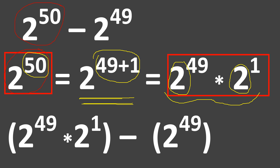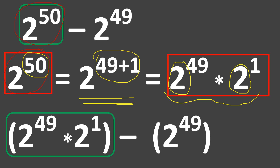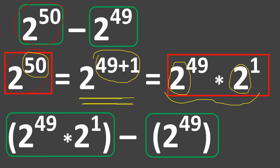We will substitute accordingly. So now you have 2 raised to the power of 49 times 2 raised to the power of 1 — which represents 2 raised to the power of 50 — minus 2 raised to the power of 49. If you look at the top, you have 2 raised to the power of 50 minus 2 raised to the power of 49, and at the bottom it is now expressed as 2 raised to the power of 49 times 2 raised to the power of 1, all in brackets, minus 2 raised to the power of 49.